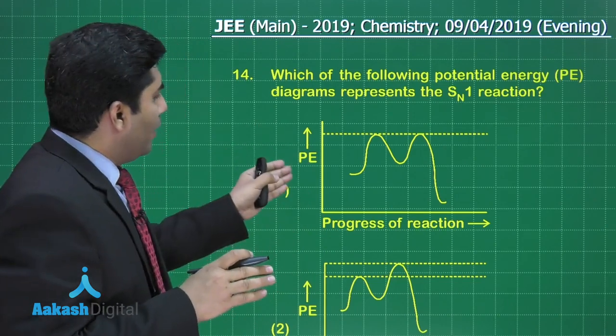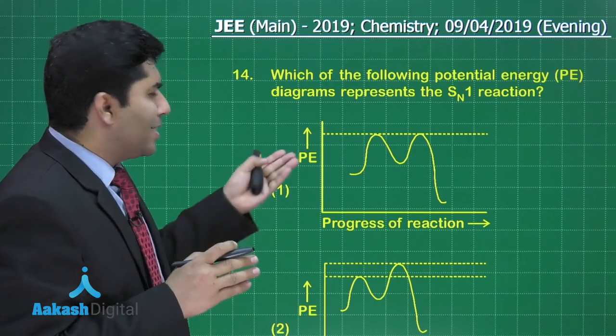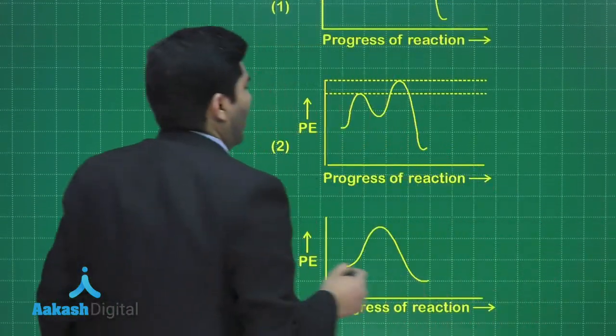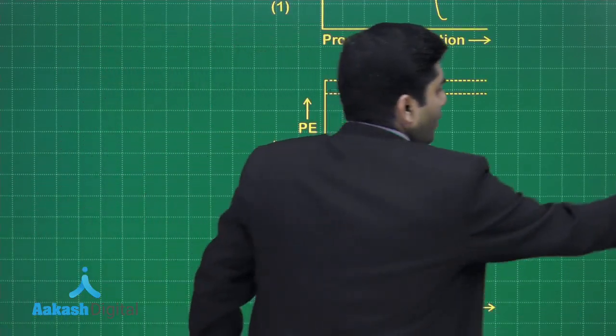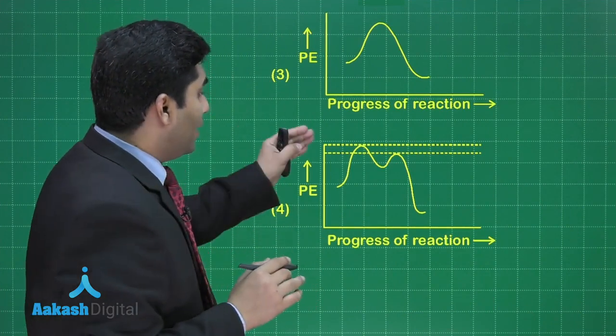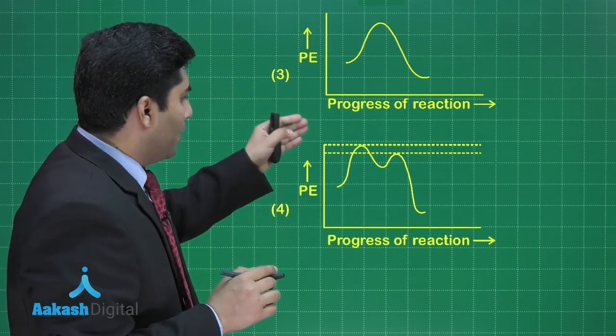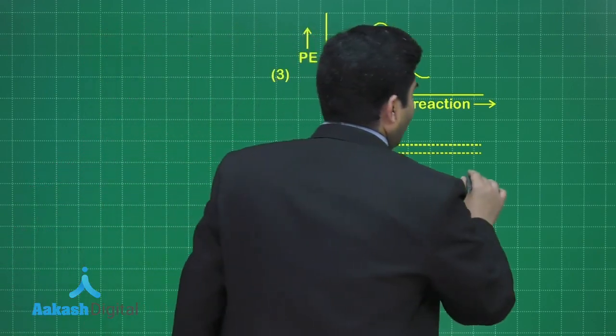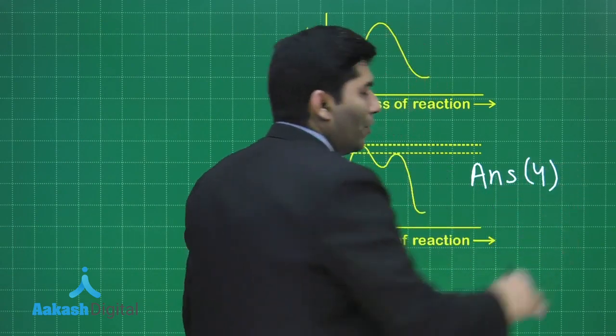So let us compare. In the first one, the potential energy of both the steps are same. This cannot be the SN1. Third one is showing a single step reaction. It is not the answer. And if we see the fourth one, you can clearly see that the potential energy of the intermediate of the first step is more than that of the second step. That's why fourth is the correct answer. So the answer of this question is option number 4.